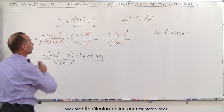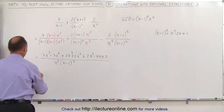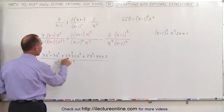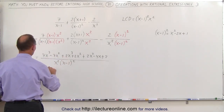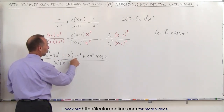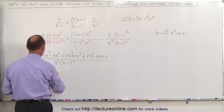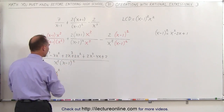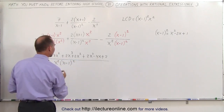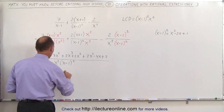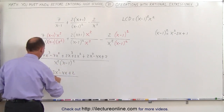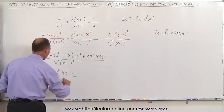Now I can collect common terms in the numerator. Starting with the x cubed terms: 7x cubed plus 2x cubed is 9x cubed. The x squared terms: minus 7 plus 2 plus 2 is minus 3x squared. There is a minus 4x term, a single x to the first power term, and plus 2 — all divided by the denominator, which is x squared times x minus 1 squared.